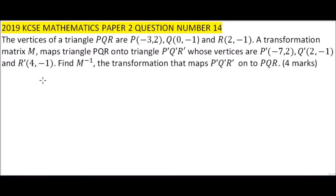This is 2019 paper 2 question number 14. We are told the vertices of a triangle PQR are P(-3, 2), Q(0, -1) and R(2, -1). A transformation matrix M maps triangle PQR onto triangle P'Q'R'.